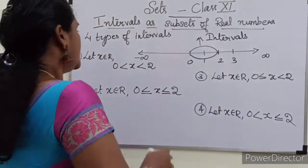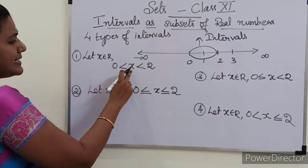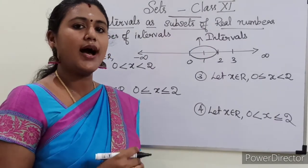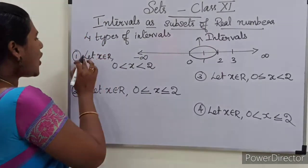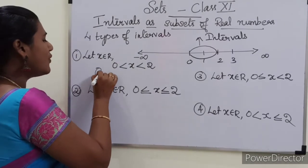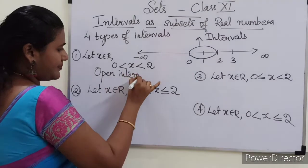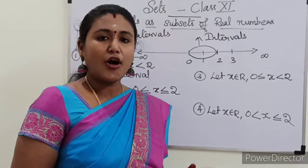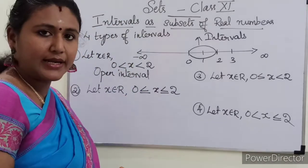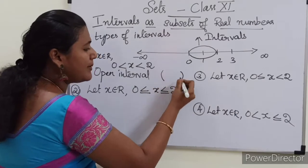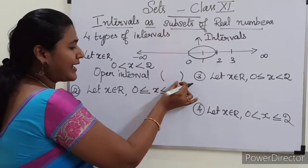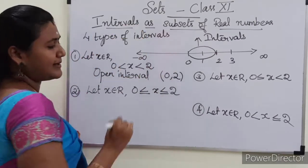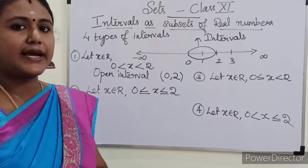In the first case, 0 < x < 2, the endpoints 0 and 2 are not included. We call this type of interval an open interval, and we denote it using normal brackets: (0, 2). This is the first type — open interval.